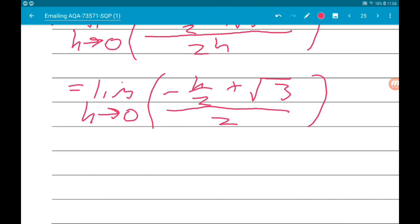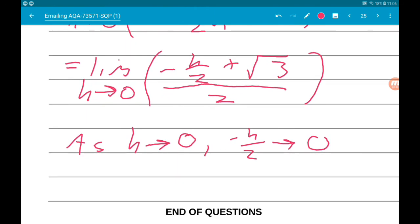So as h tends to zero, minus h over two tends to zero.